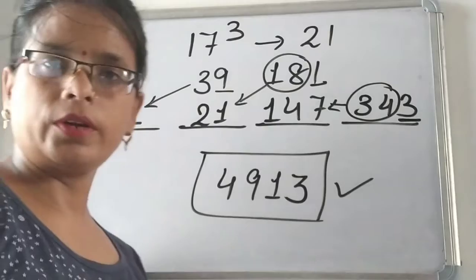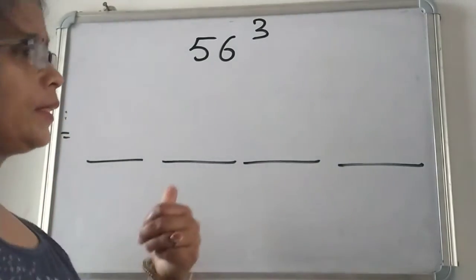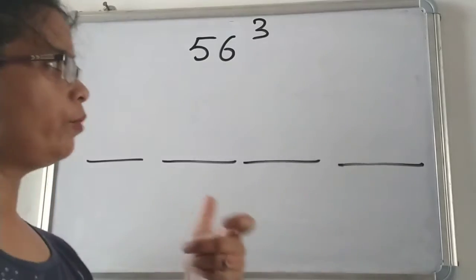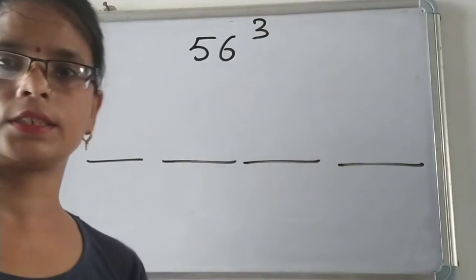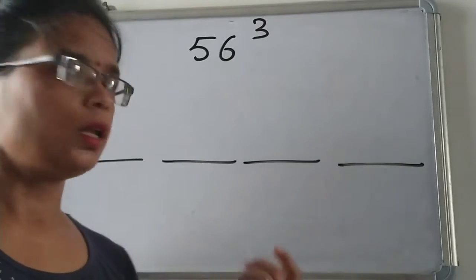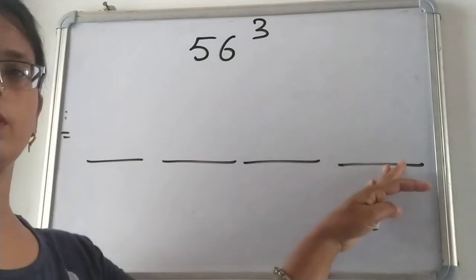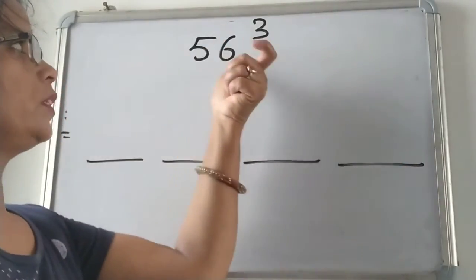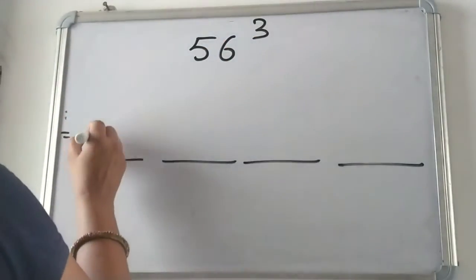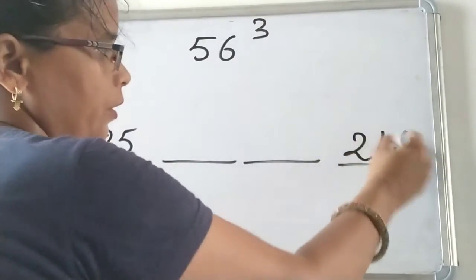Let's take one more example. In this example we are doing cube of 56. As I told you in the last example, we get these numbers by the cube of 5 and 6. So cube of 5 is 125 and cube of 6 is 216.